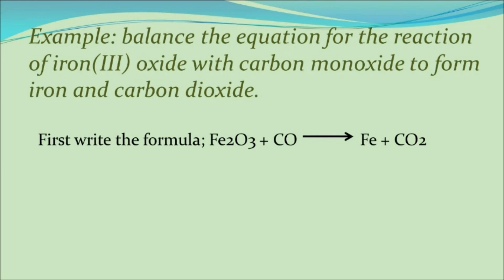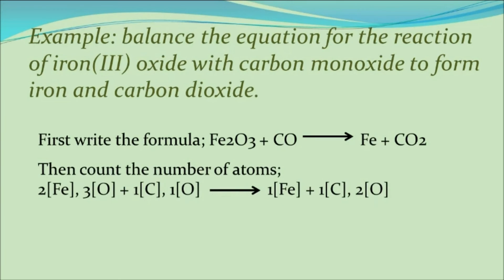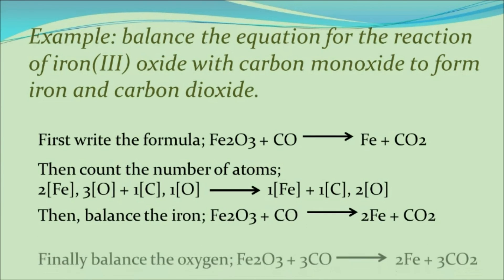That is Fe2O3 plus CO gives Fe plus CO2. Then we count the number of atoms: 2 iron atoms plus 3 oxygen atoms and 1 carbon atom plus 1 oxygen atom on the reactant side, and 1 iron plus 1 carbon and 2 oxygen atoms on the product side. Then we balance the iron, and finally we balance the oxygen to get the equation completely balanced.